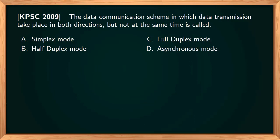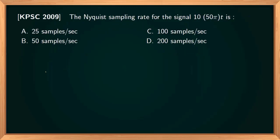The data communication scheme in which data transmission takes place in both directions but not simultaneously is called half duplex mode. In simplex mode, only one-direction transmission is possible, like a radio. In full duplex mode, simultaneous two-way transmission is possible, like a mobile phone. In half duplex mode, an example is walkie-talkie or the wireless set used by police officers.